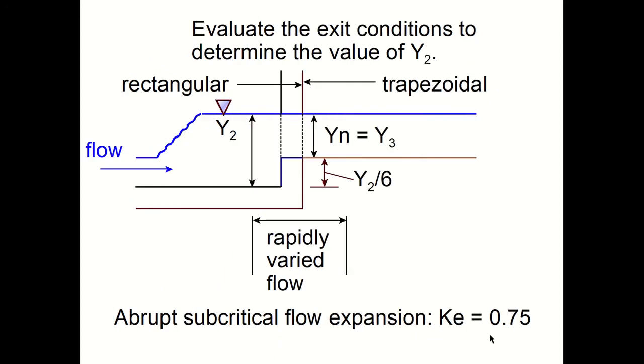So if we look at the downstream end, we have the rectangular drop structure going into the trapezoidal channel. The vertical step up is Y2 over 6, and Y3 would be equal to the normal depth. We're in a situation of rapidly varied flow. We're going to use the energy equation with the abrupt subcritical flow expansion loss coefficient of 0.75.